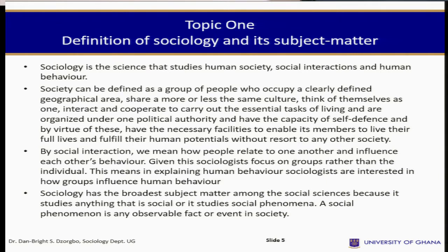Society can be defined as a group of people who occupy a clearly defined geographical area, share more or less the same culture, think of themselves as one, interact, cooperate and carry on the essential tasks of living. By social interaction we mean how people relate to one another and how they influence each other's life and behavior.